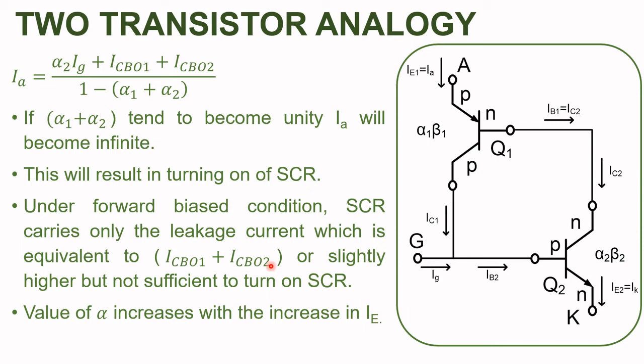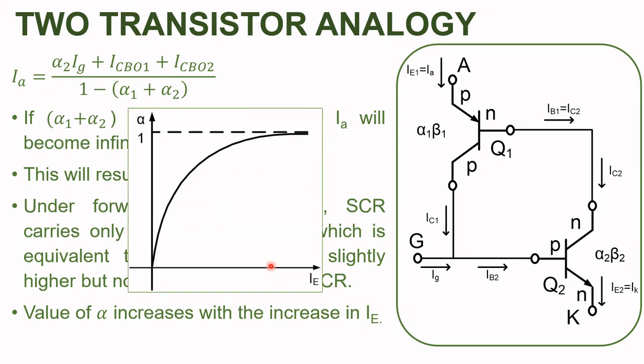From transistor theory, we know that the value of alpha increases with the increase in emitter current. As the emitter current IE increases, alpha tends to become unity. If by some means the emitter currents of both transistors can be increased so that alpha1 and alpha2 approach unity, then from the anode current equation, we can prove that the SCR is turned on.